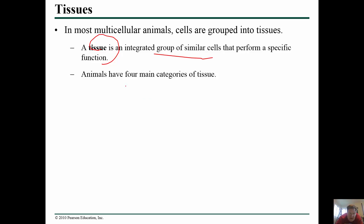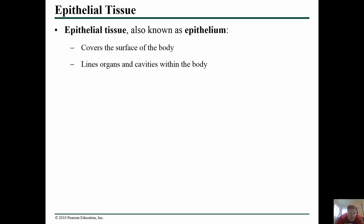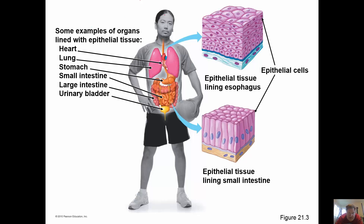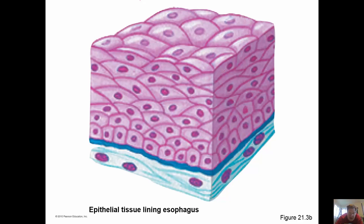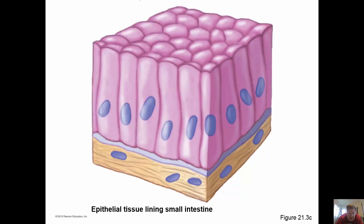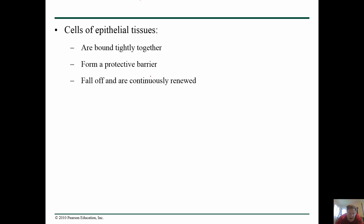There are four main categories of tissues in animals. We have epithelial tissue, or the epithelium, which covers the surface of the body and lines organs and cavities within the body. Everything is packaged within a tissue. Here's an example showing the outer epithelium and inner tissues. Epithelial tissue cells have specific characteristics: they're bound tightly together, they typically form a protective barrier, and they are constantly being renewed.